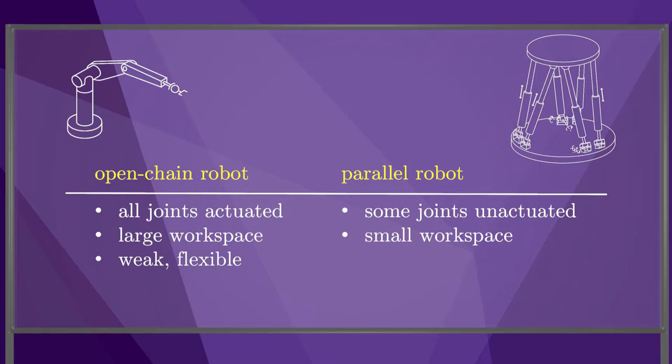Each joint of an open chain robot has to support all of the end effector force, so open chain robots tend to be relatively weak. Also, flexibility at the joints and links tend to add. Parallel robots, on the other hand, tend to be stiff and strong, since the end effector force is distributed among the legs.